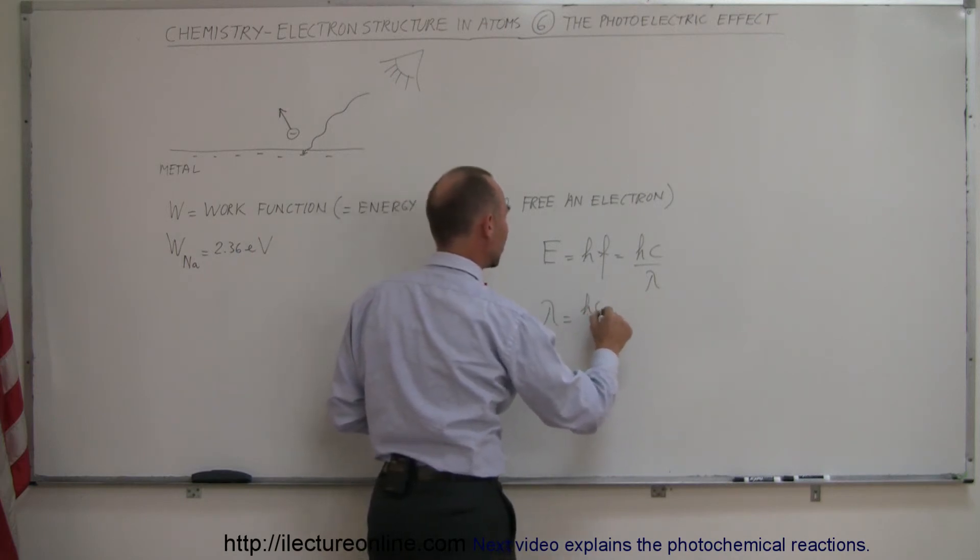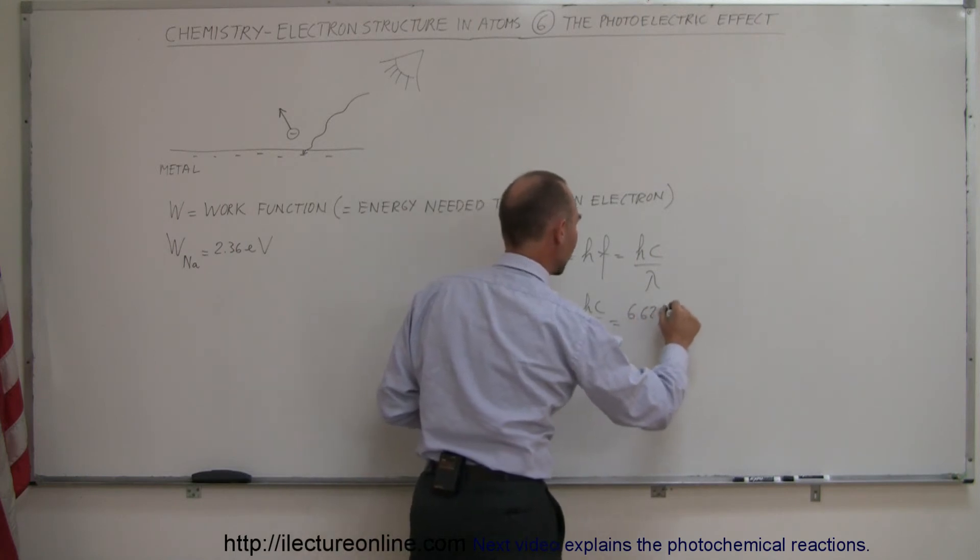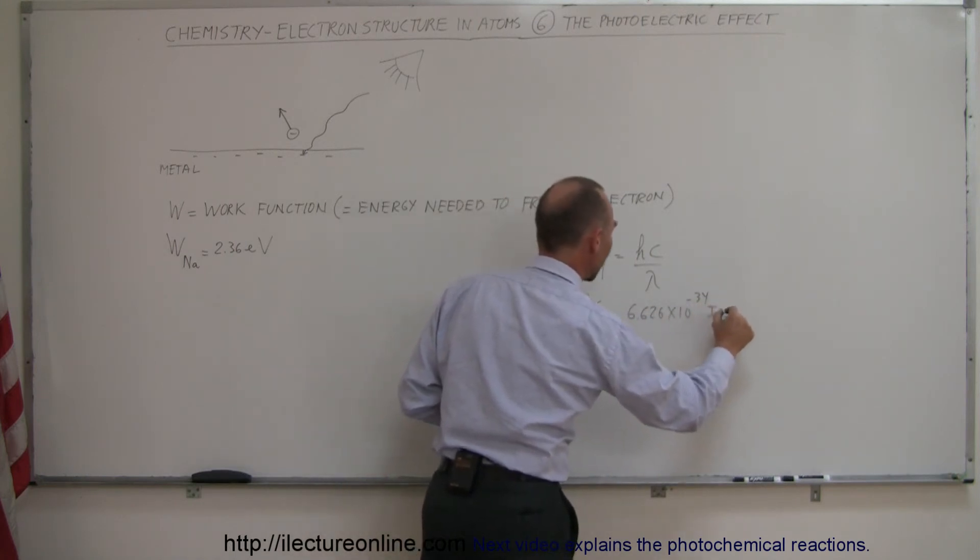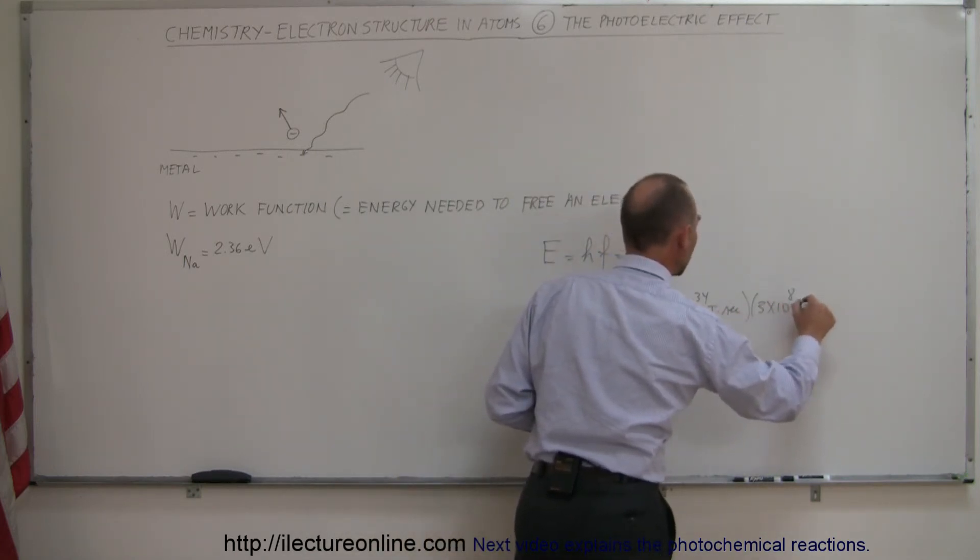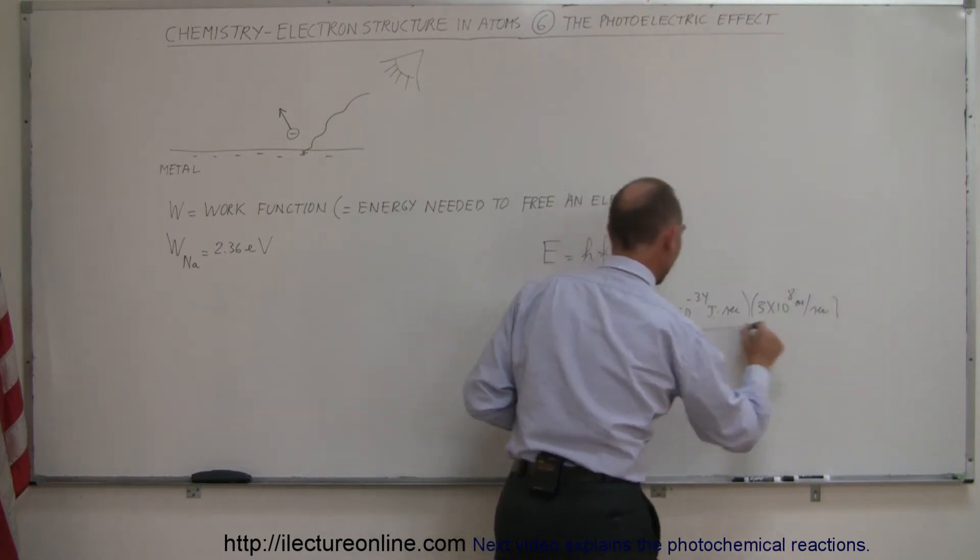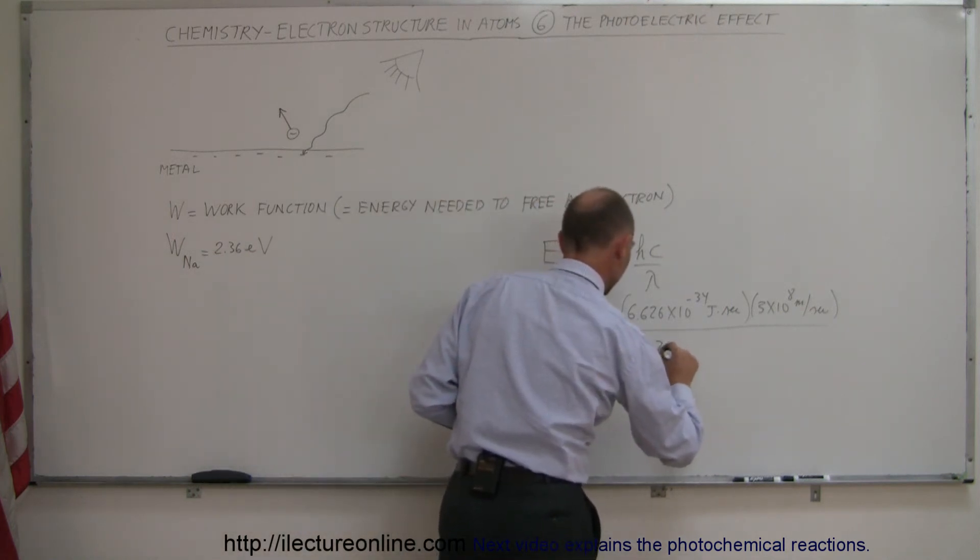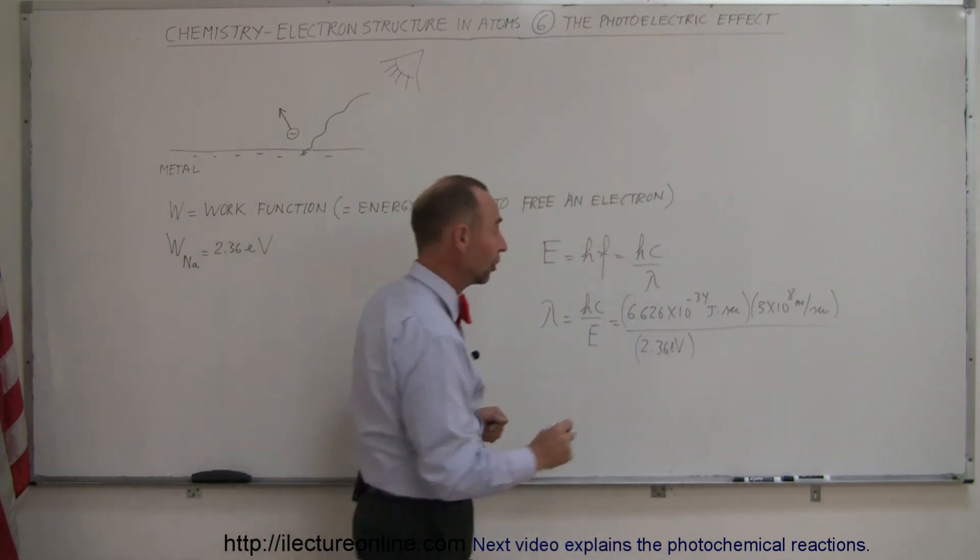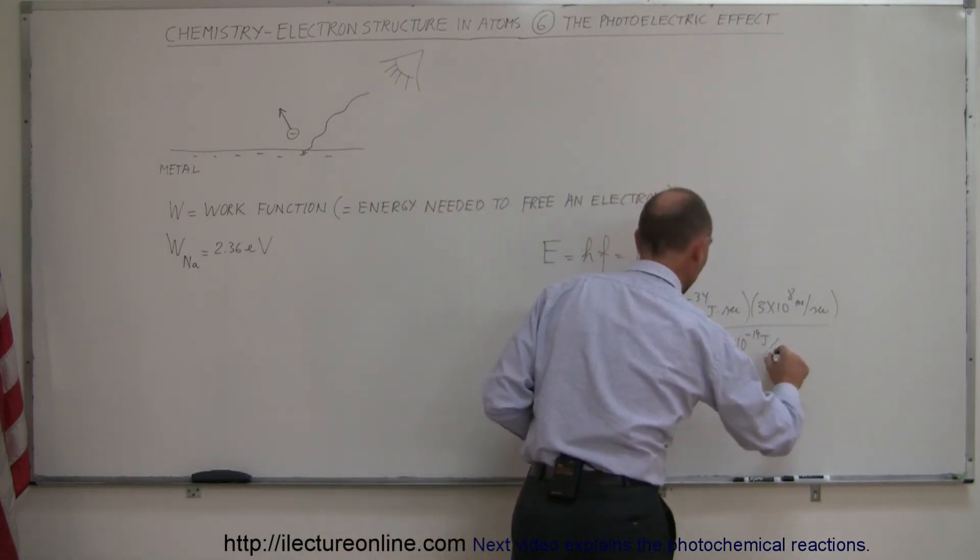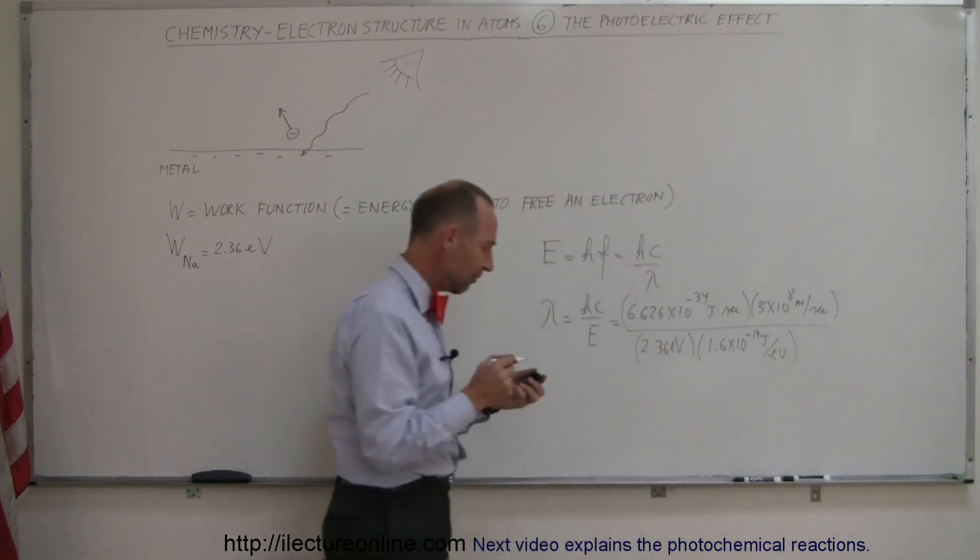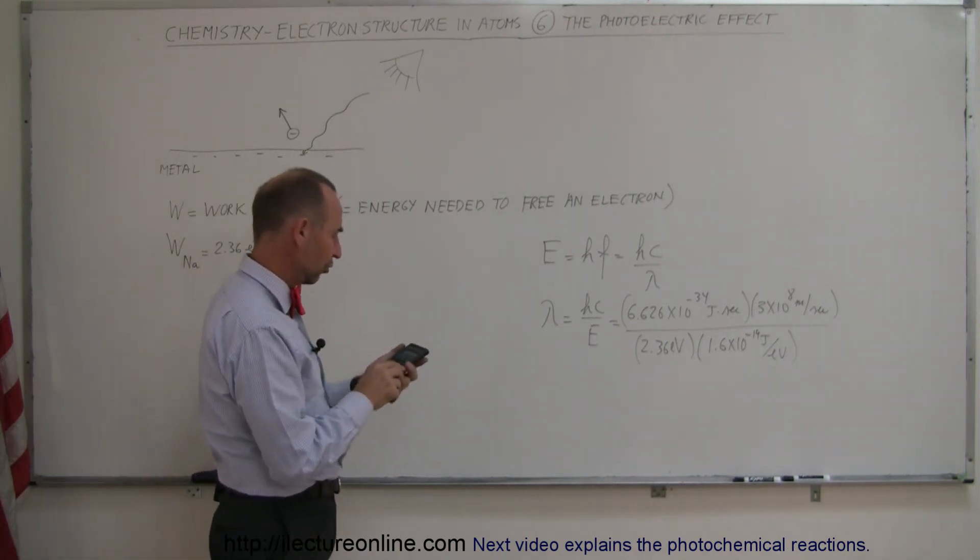The wavelength is equal to hc divided by the energy, so that would be equal to Planck's constant, 6.626 times 10 to the minus 34 joules times seconds, multiply it times 3 times 10 to the 8 meters per second, and divide that by the energy. The energy is 2.36 electron volts, and of course, you want to convert electron volts to joules, and so that is equal to 1.6 times 10 to the minus 19 joules per electron volt. So, that will give us the wavelength of the photon, or the minimum wavelength required to set an electron free in sodium.